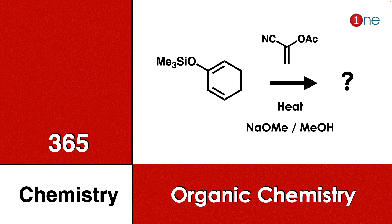Welcome to One Chemistry. This is the 365 Chemistry Series — organic chemistry questions for you. Here you have a cyclic system with a diene and a selenol, and you are reacting with an alkene attached with a cyanide and an acetate group. You are heating it up.